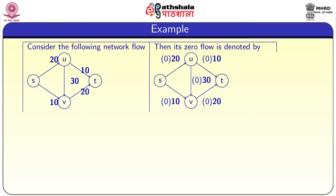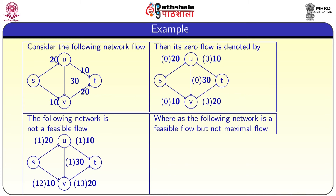First, we assign a zero flow — that is, flow 0 on each edge, denoted in brackets. The following third diagram shows a network that is not a feasible flow. For vertex u, the inflow is 1 whereas the outflow is 2: u to t has flow value 1 and u to v also has flow value 1. So f-in(u) equals 1 and f-out(u) equals 2, hence it is not a feasible flow.